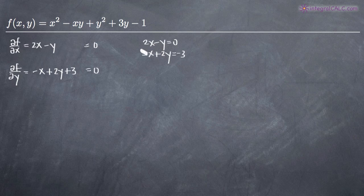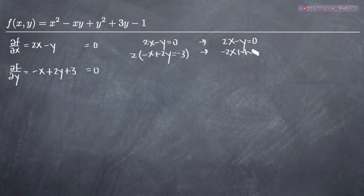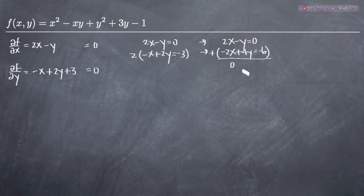I'm going to multiply the second equation by 2, giving us -2x + 4y = -6. The reason I chose to do that is because now I have a positive 2x and a negative 2x, so if I add these equations together, the x's cancel and I can solve for y. Adding gives -y + 4y = 3y on the left, and 0 + (-6) = -6 on the right. Dividing both sides by 3 gives y = -2.